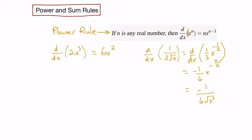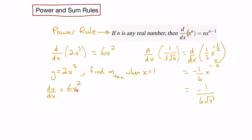Now let's use the power rule to help solve a problem. Let's say we're given the function y equals 2x cubed and we want to find the slope of the tangent line when x equals 1. By definition, the derivative gives us the slope of the tangent line at any point on the curve. So we find the derivative using the power rule: the derivative with respect to x is 6x squared. Then to find the slope at x equals 1, we substitute 1 into the derivative and get 6 times 1 squared, which is 6.